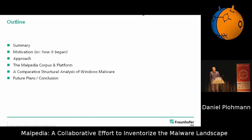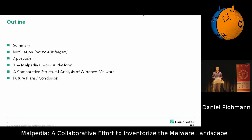The outline for this talk is: I start with a summary so you get directly into the topic and what it's all about. Then I go back about two years in time, motivating how we came to that idea and what has happened until then. I give a layout of the approach we followed and then present Malpedia itself. The next step is showing you what you can do with this corpus — essentially a very clean corpus of unpacked malware — and then going a bit into the future.